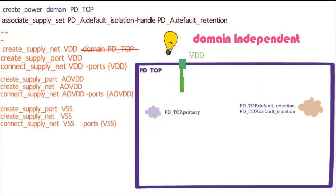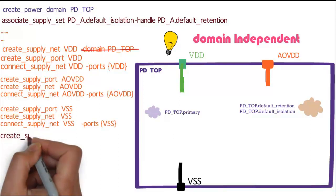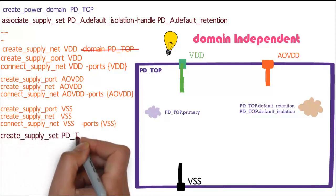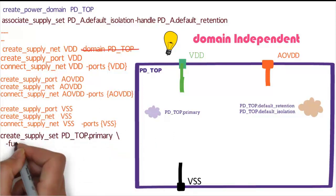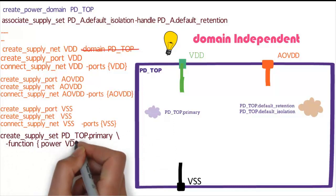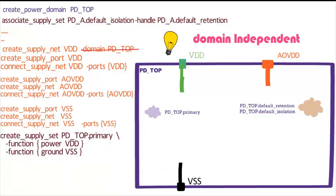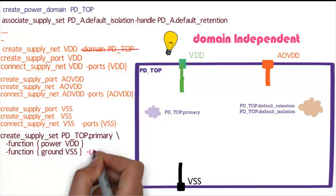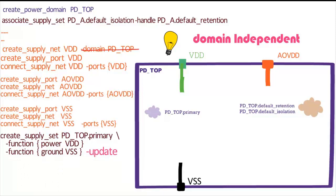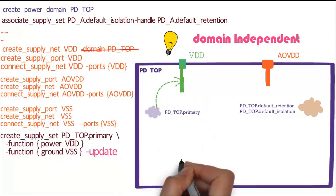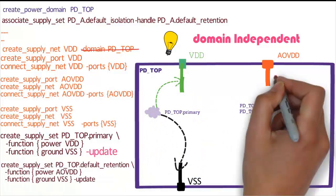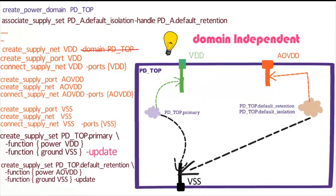We do the same thing for aovdd by creating the net, port, and connecting them, and similarly for vss. Now let's map supply set functions to the actual supply nets we just created, using: create_supply_set pdtop.primary -function power to vdd and ground to vss. Remember to use the -update option because pdtop.primary is already defined. We do the same thing for pdtop.default_retention.